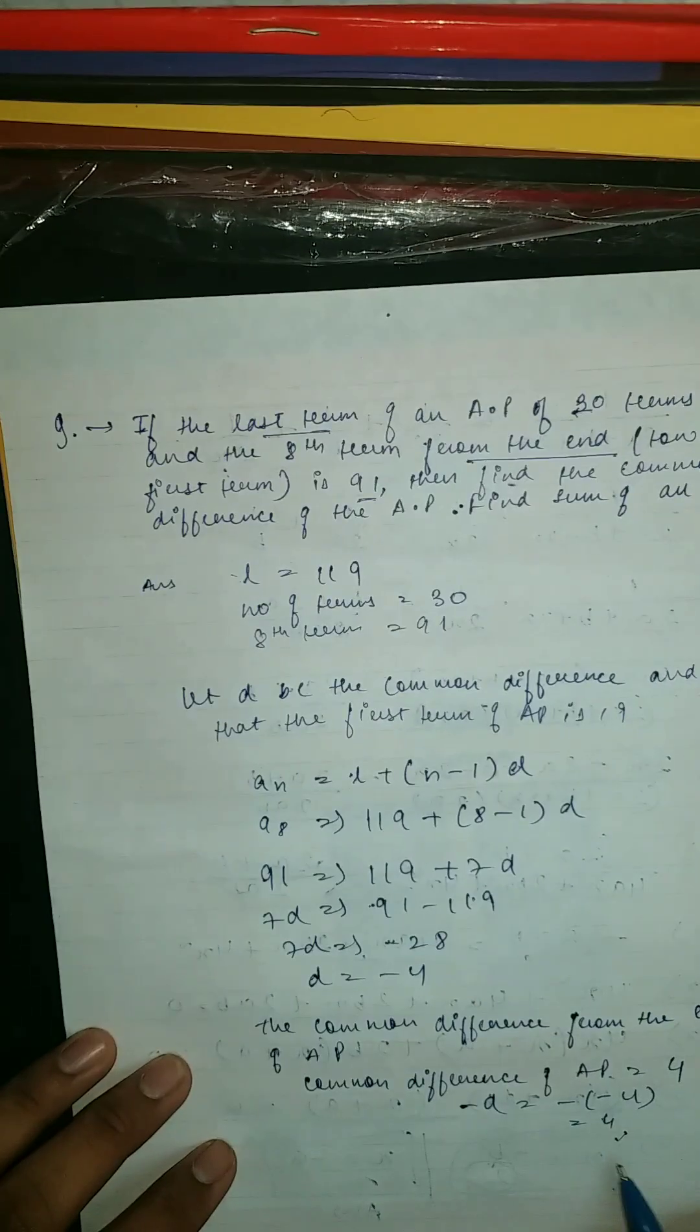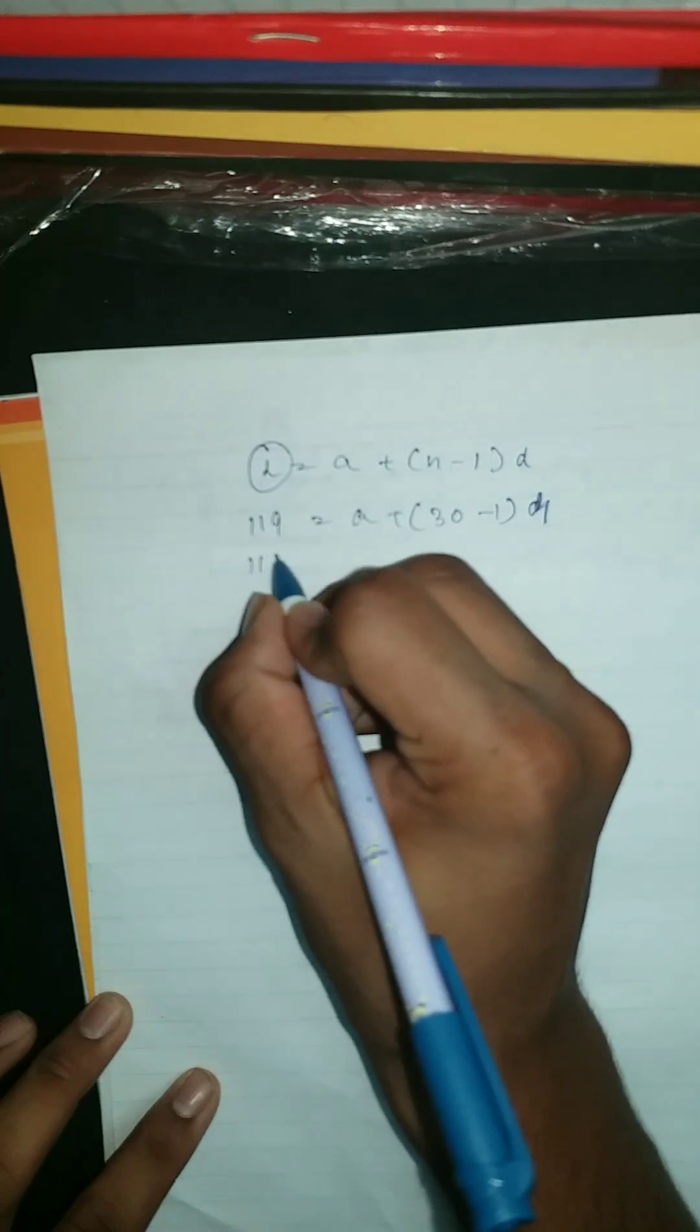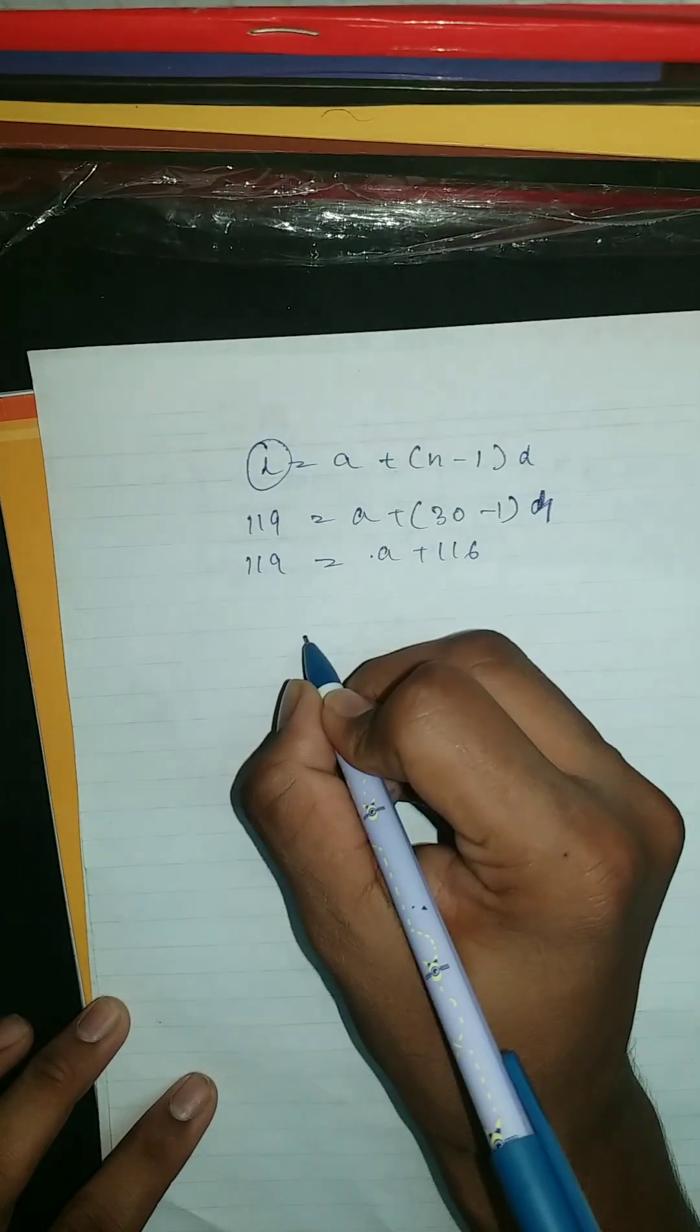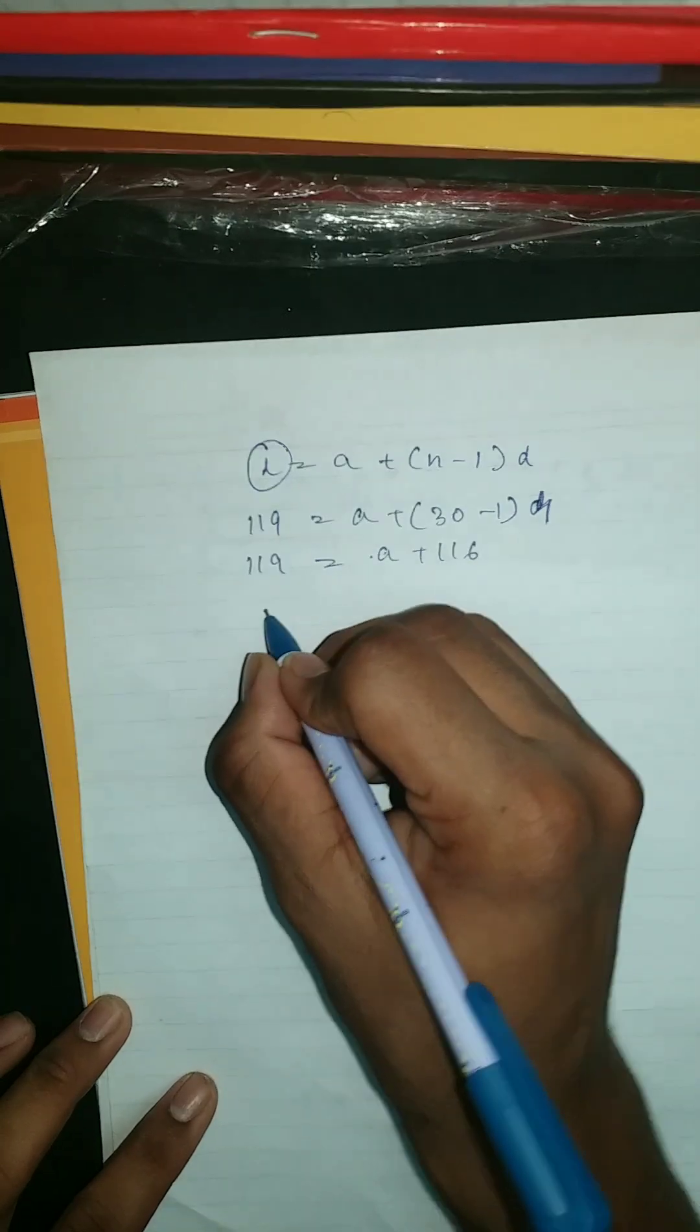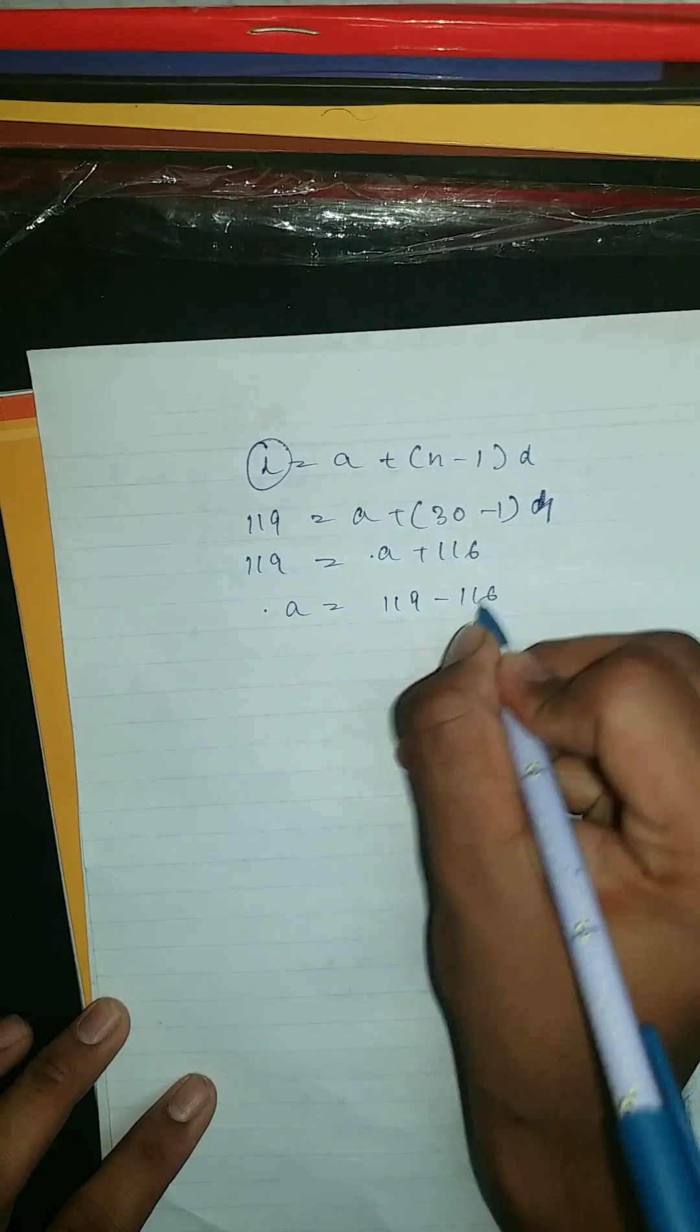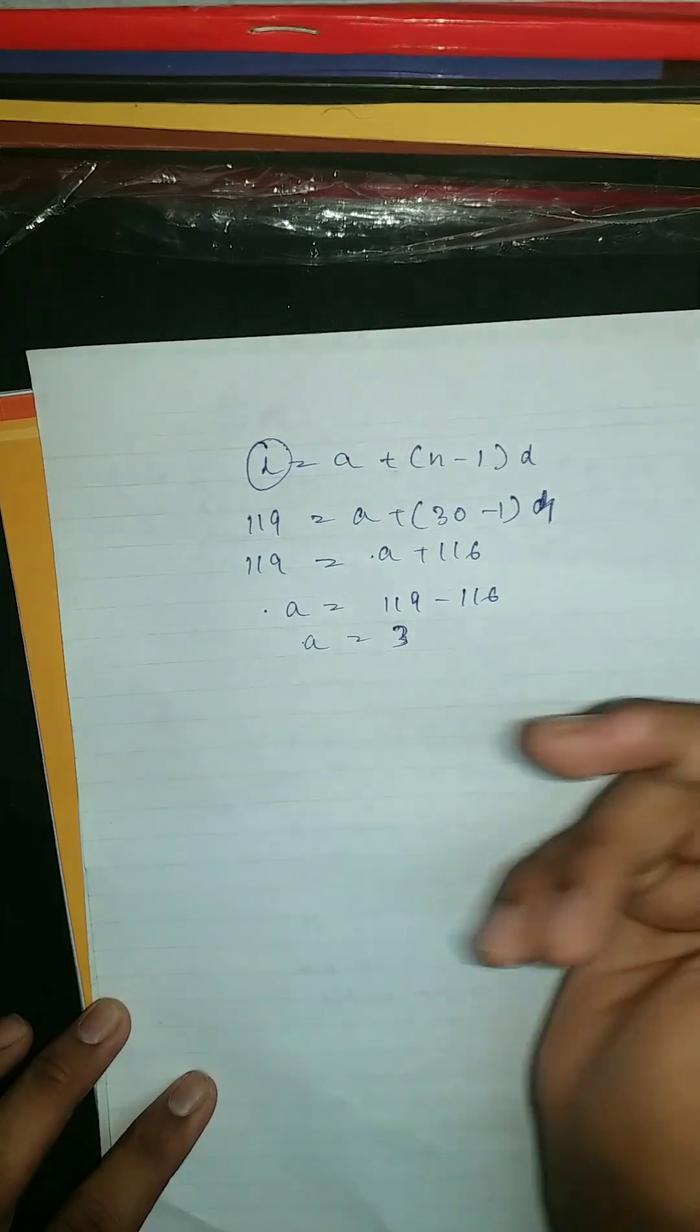So this should be 119 equal to A plus 116. Then A is equal to 119 minus 116, which is equal to 3. So we got A equals 3.